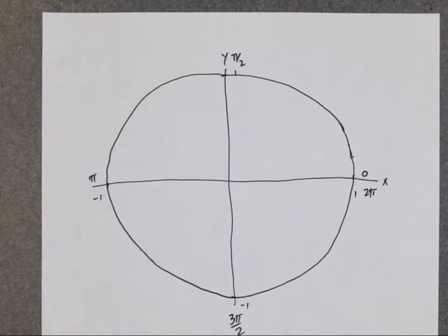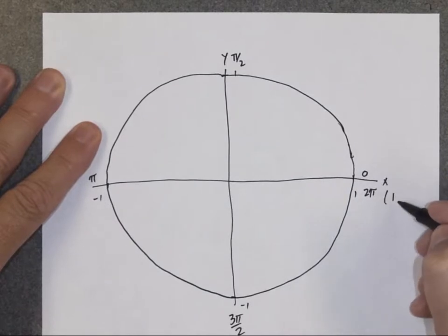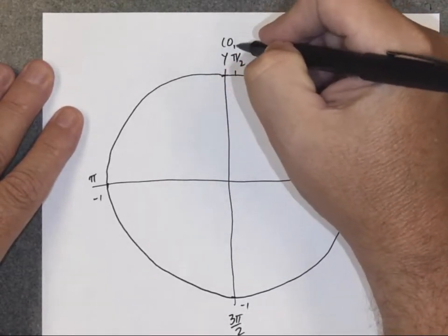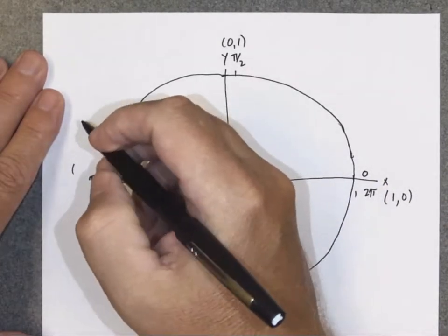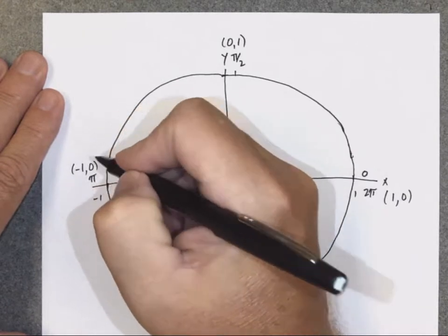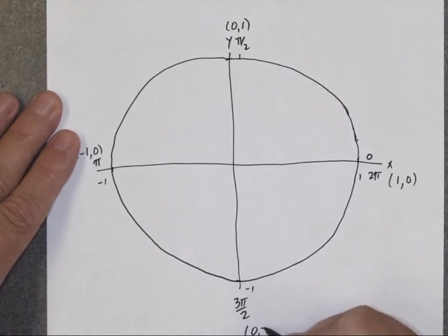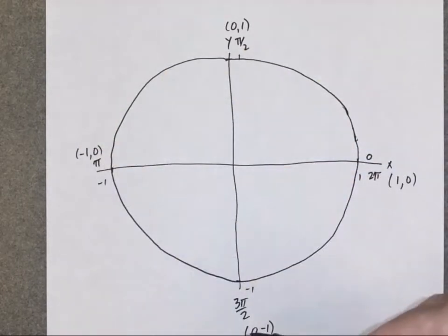The whole key to the unit circle is: once you find your angle, the value of x at that point is the cosine and the value of y is the sine. At zero or 2π, x is one and y is zero. At π/2, x is zero and y is one. At π, x is negative one and y is zero. At 3π/2, x is zero and y is negative one. These are easy to remember.